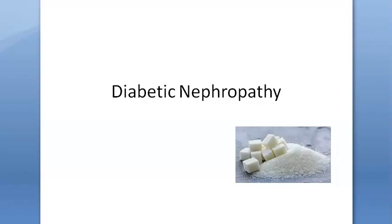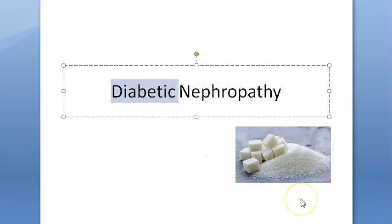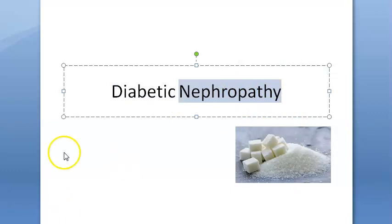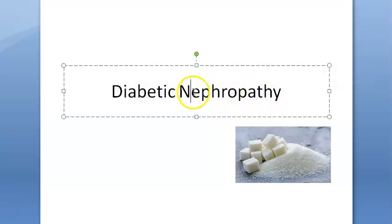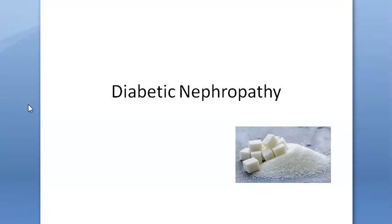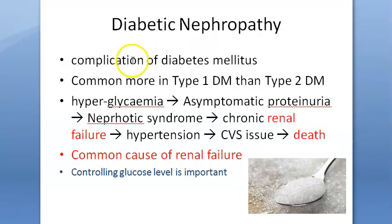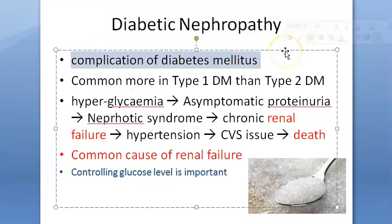In this video we want to look at diabetic nephropathy, which is very important for the exam. A person who has diabetes, or chronic hyperglycemia, can develop many complications like retinopathy, nephropathy, and peripheral neuritis. One of those complications is nephropathy — 'nephro' relates to the nephrons and kidneys. Diabetic nephropathy is a complication of diabetes mellitus.